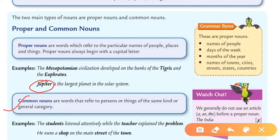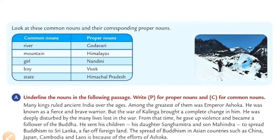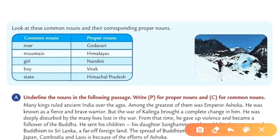Common nouns are words that refer to persons or things of the same kind or general category. For example: the students listened attentively while the teacher explained the problem. Student is a common name, teacher is not a particular teacher so it is a common name, and problem is also a common noun. In the table on screen, you can see: river is a common name, Godavari is a proper name, mountain is a common name, and Himalayas is a proper name.